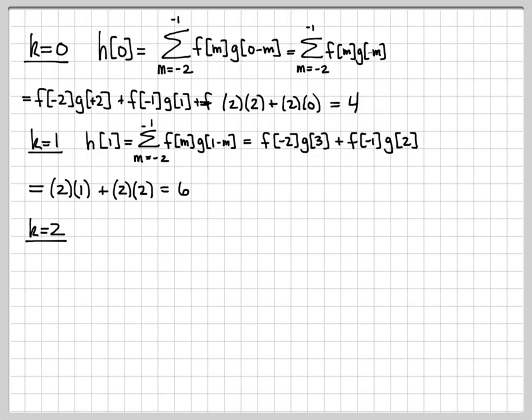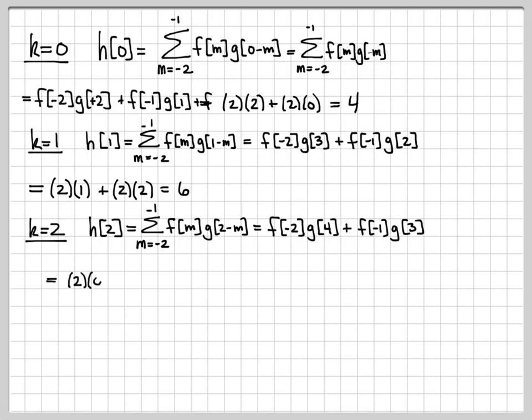And then finally, for k equals 2, I have h of 2 is equal to the sum from minus 2 to minus 1, f of m g of 2 minus m. I've replaced all the k's with 2. I can write this out as the sum of two different terms again. f of minus 2 times g of 4. Again, note that 4 plus a negative 2 is 2. They add up to 2 because I'm computing h of 2. Plus the next term is f of minus 1 times g of 3. Again, 3 plus a negative 1 is 2. They add up to 2 because I'm computing h of 2. If I substitute in the values for the signals, f at minus 2 is equal to 2, g of 4 is 0, f of negative 1 is 2, and g of 3 is equal to 1. So this is equal to 2.